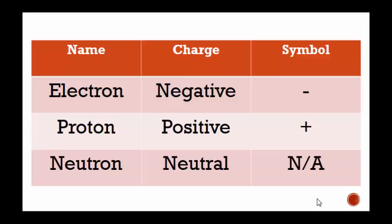Here we have a chart. It's a great chart that you may want to write down. Electron has a negative charge, the symbol is a negative sign or a minus sign. Proton, positive charge, plus sign. Neutron, a neutral charge and it has no symbol.